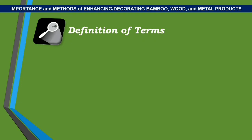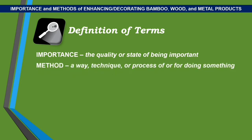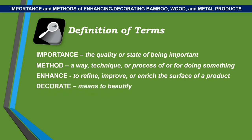Definition of terms. Importance: the quality or state of being important. Method: a way, technique, or process of or for doing something. Enhance: to refine, improve, or enrich the surface of a product. Decorate: means to beautify.